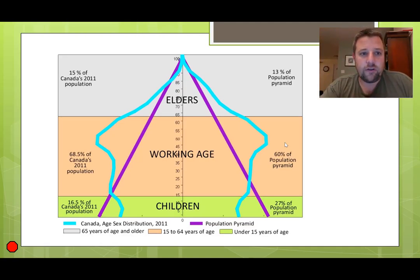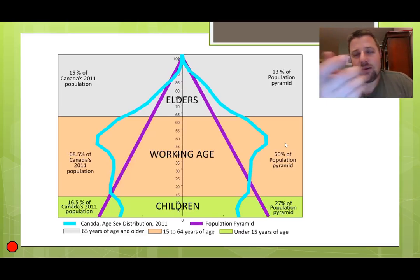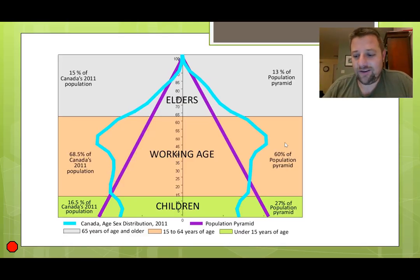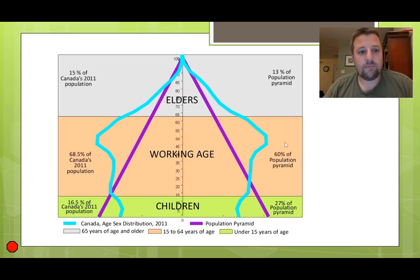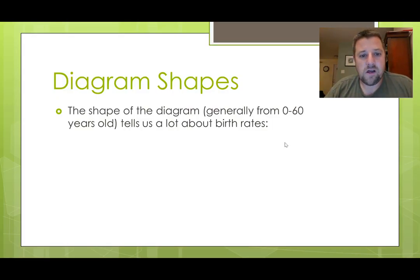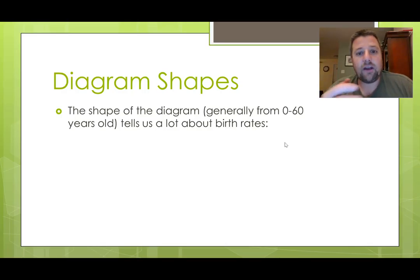I zoomed in just a little bit — this is 2011 Canada. I chose Canada because it was a good graphic to make my point. Children at the bottom, working age in the middle — a big chunk of the working age — and elders at the top. Besides breaking down these graphics into different parts, we can also look at the general shape of the diagram, which tells us a lot about the society and its birth rates.